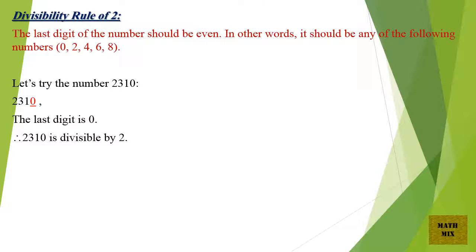Divisibility Rule of Number 2. The last digit of the number should be even. In other words, it should be any of the following numbers: 0, 2, 4, 6, and 8. Let's try the number 2310. The last digit is 0. Therefore, 2310 is divisible by 2.